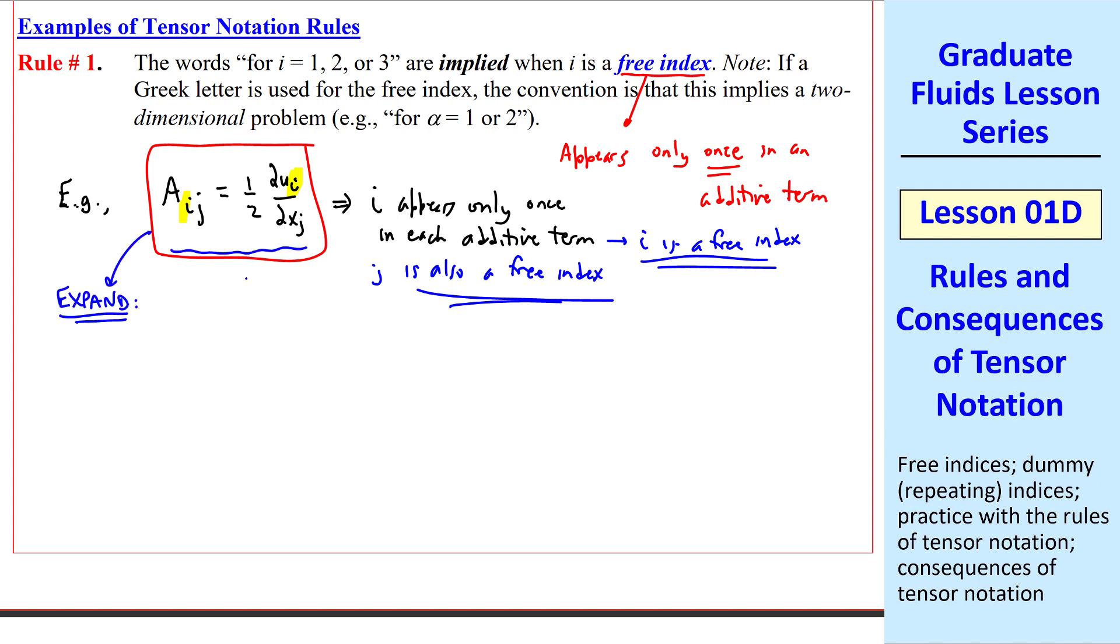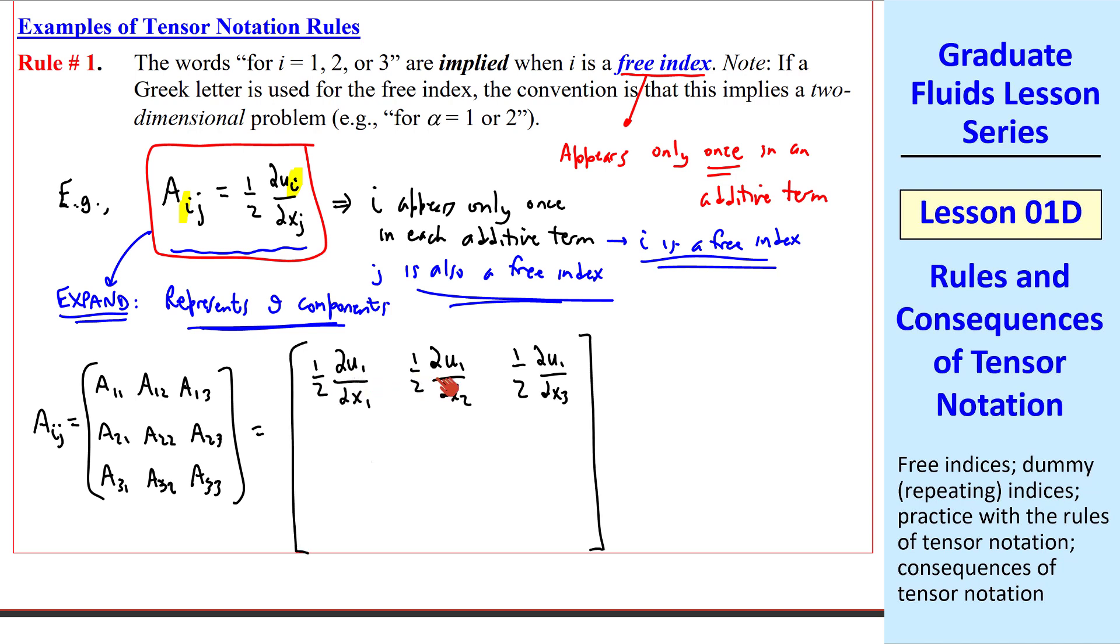If we expand this out, this equation represents nine components. There are nine possible combinations of i and j, when both of them are either 1, 2, or 3. In matrix form, we write aij this way. We're expanding it out from our equation. a11 is 1 half del u1 del x1, since both i and j are 1 in this expression. The a12 term becomes 1 half del u1 del x2. And the a13 term is 1 half del u1 del x3. This first row has i equal 1 and j 1, 2, and 3.